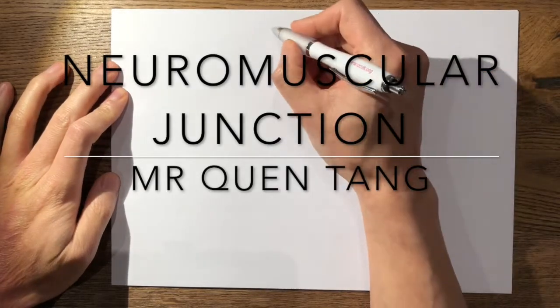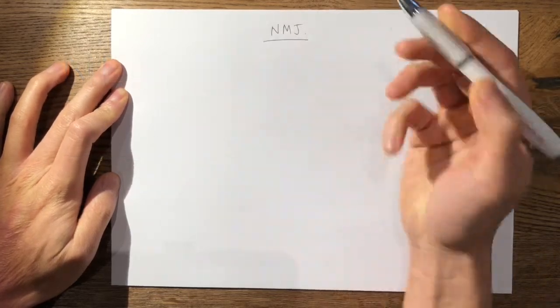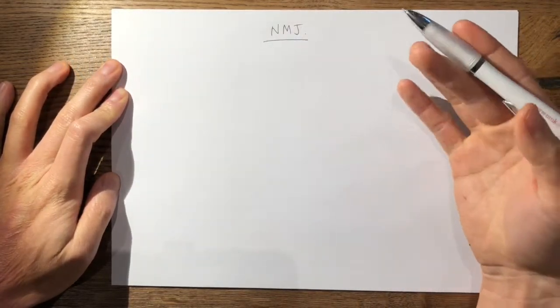In this video I'm going to talk about what happens at the neuromuscular junction and it's really a continuation from the action potential video and the nerve structure video.